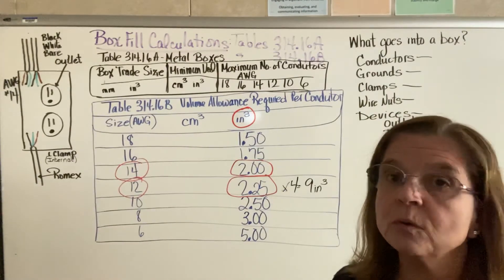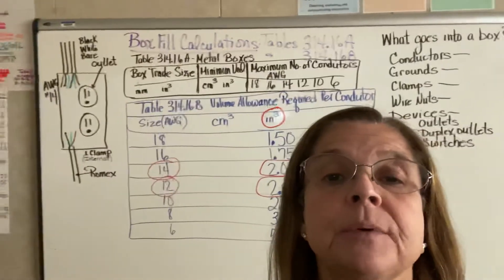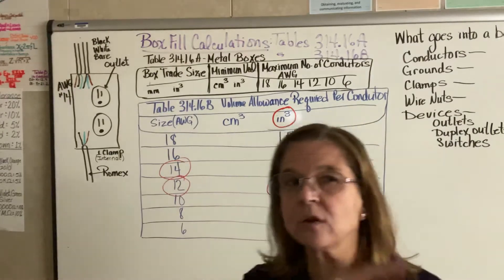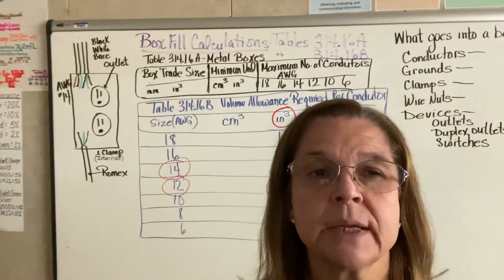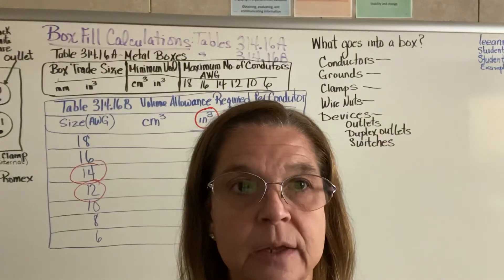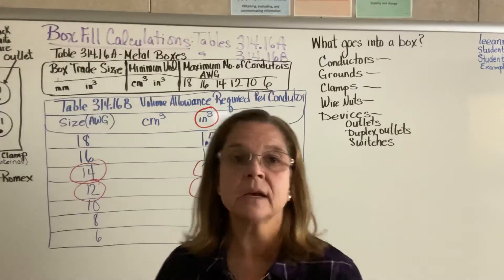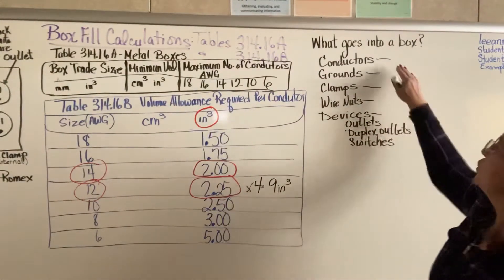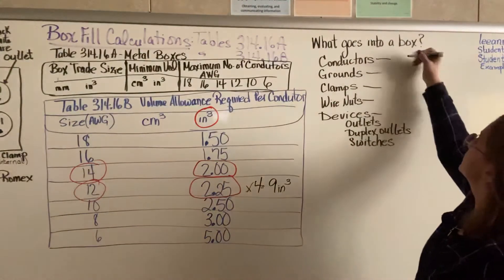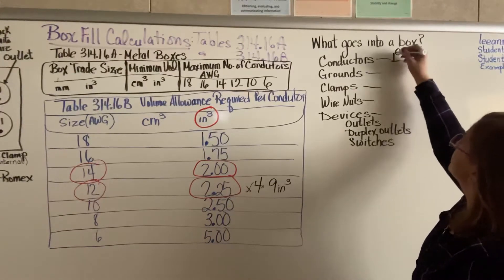So what I have for you on the side over here is I drew an example of a box for us to look at. Before I go to that box, what do we actually put into the box? So I have another list over here for you of what exactly goes into the box. In that box you will find things such as your conductors. Every conductor, each conductor counts one time.